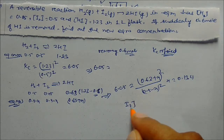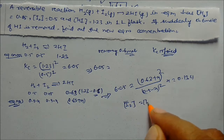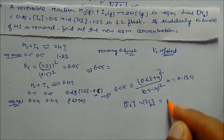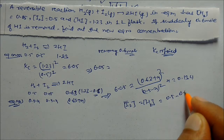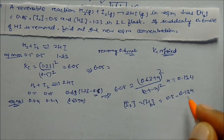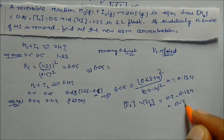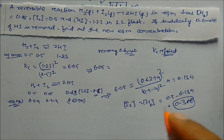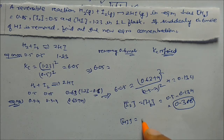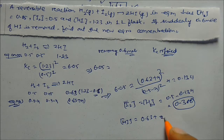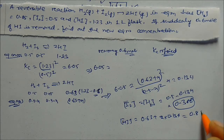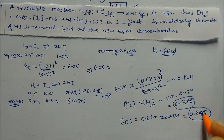Concentration of H₂ and I₂ will be 0.5 − 0.134 = 0.366 mol/L. Concentration of HI will be 0.63 + 2(0.134) = 0.8898 mol/L. These are our answers.